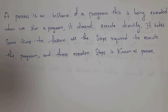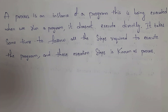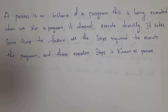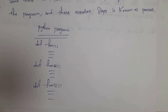When I run a program, it does not execute directly. It takes some time to follow all the steps required to execute the program. Whenever we execute a program, it will follow some steps in order to execute, and we call these steps as process. For example, this is a Python program — now I am executing this program, so the program which is being executed is known as a process.